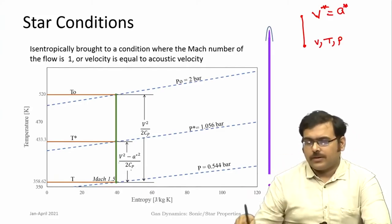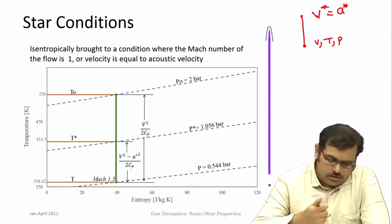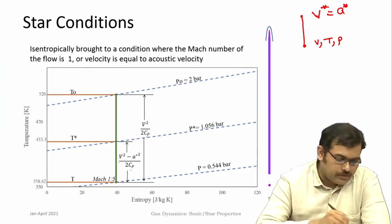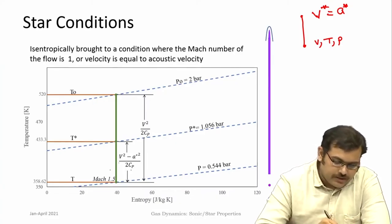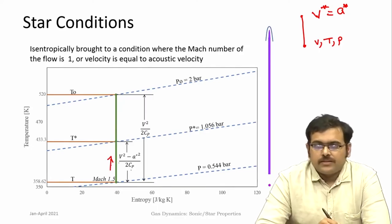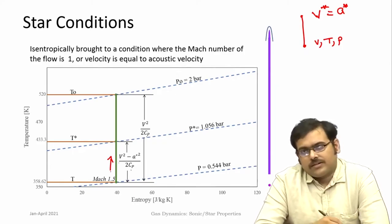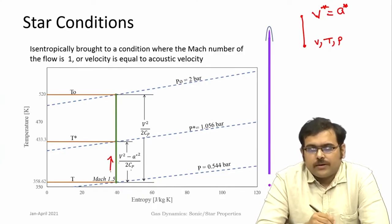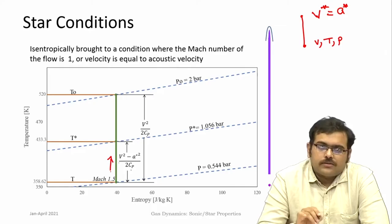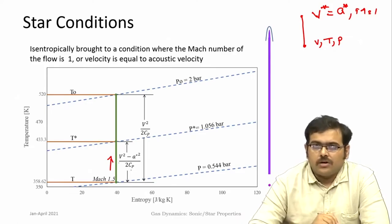Now you should understand this is an isentropic process. As the process is going on — and we have seen this on the T-s diagram for stagnation temperature — as it goes towards the sonic point its temperature is changing. That means if temperature is changing, the acoustic speed is also changing. We are looking for that particular point where the velocity during the process equals the acoustic speed at that point. Mach number will become equal to 1; this particular condition is known as the sonic condition.